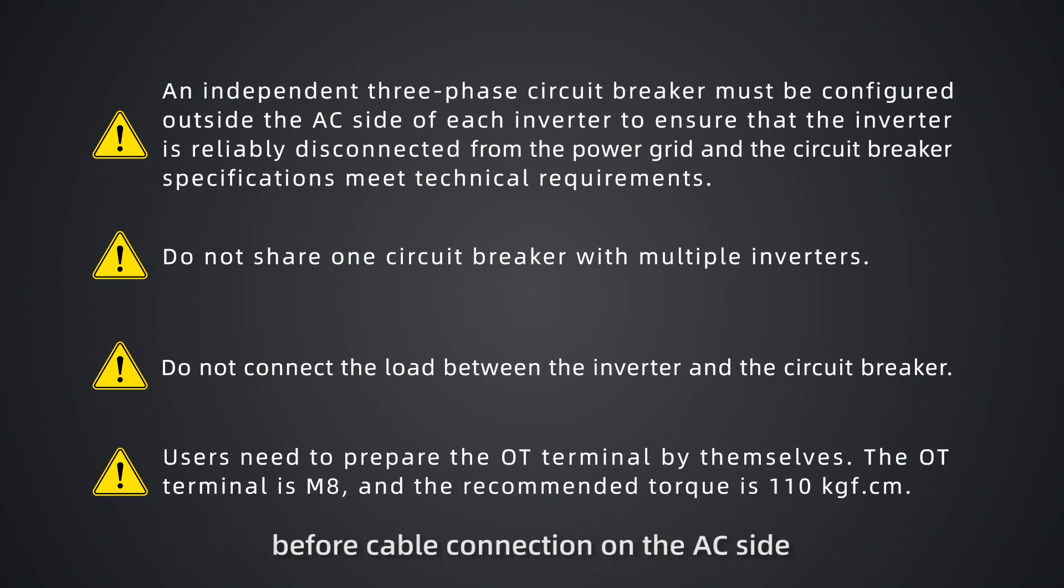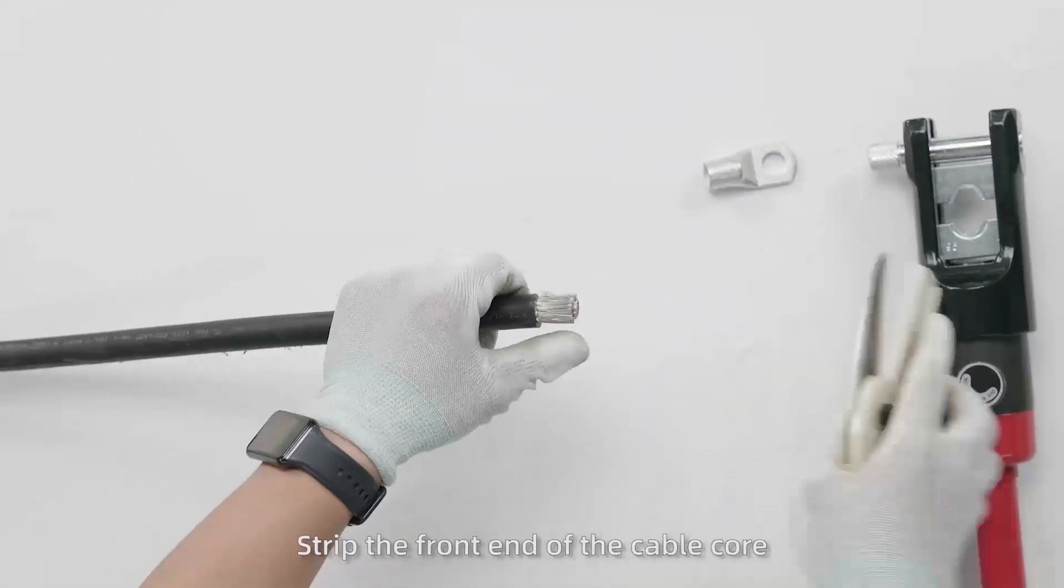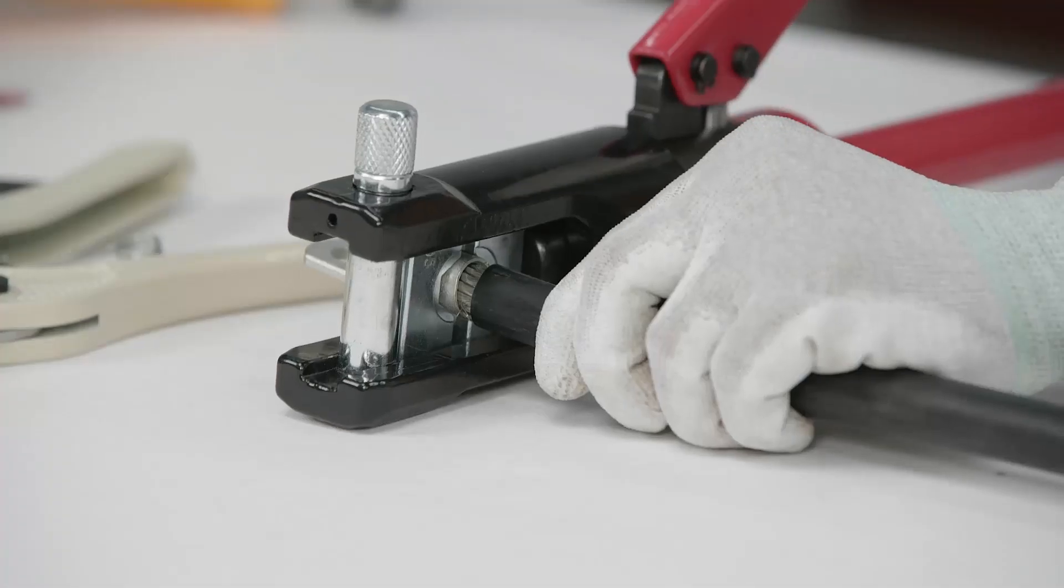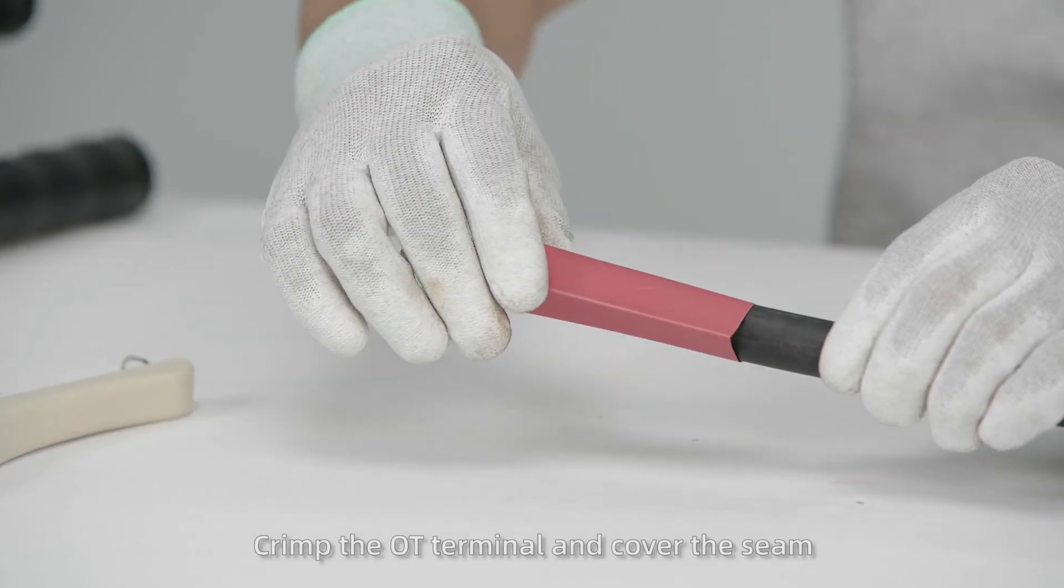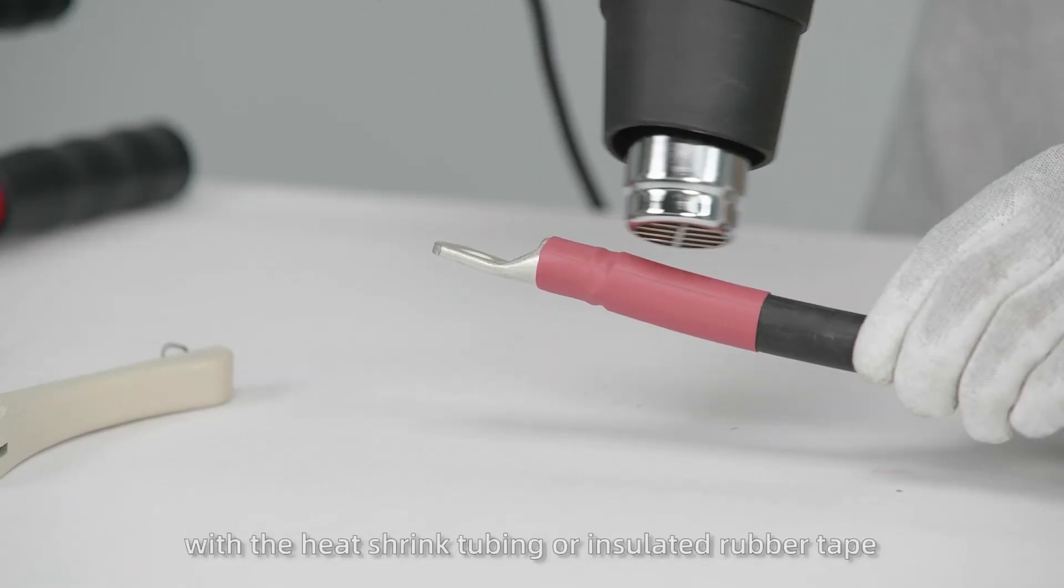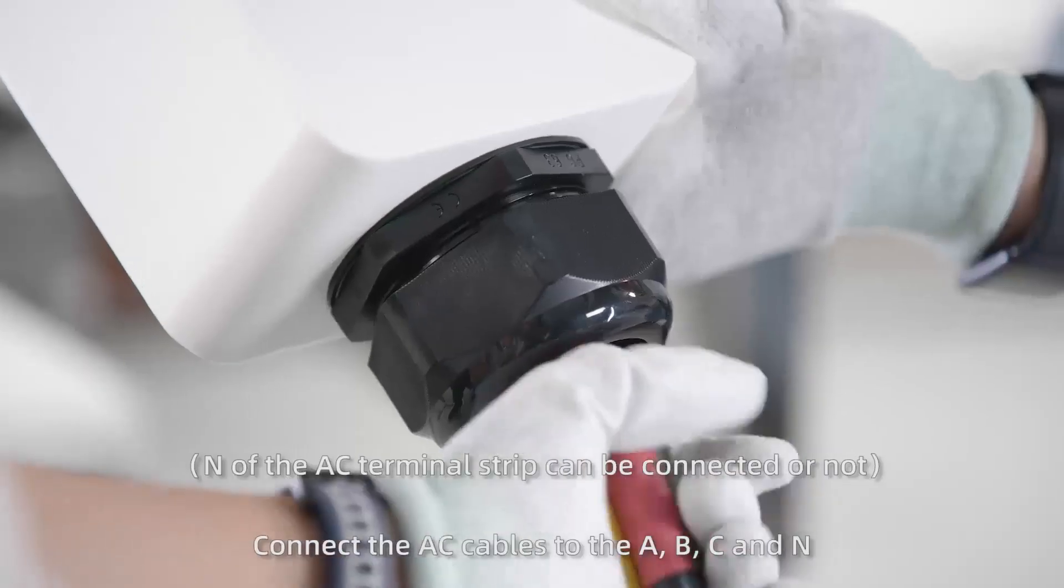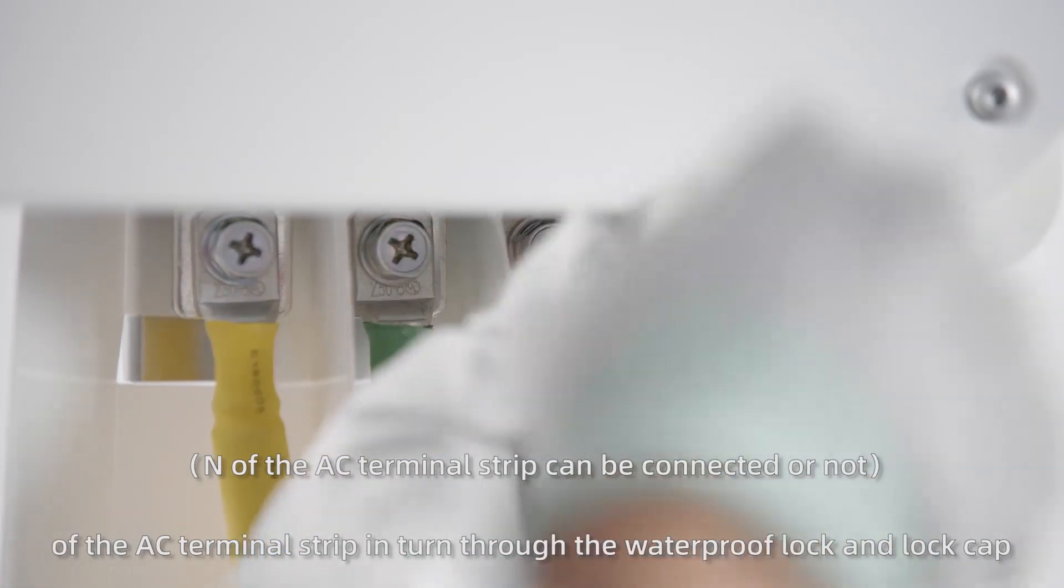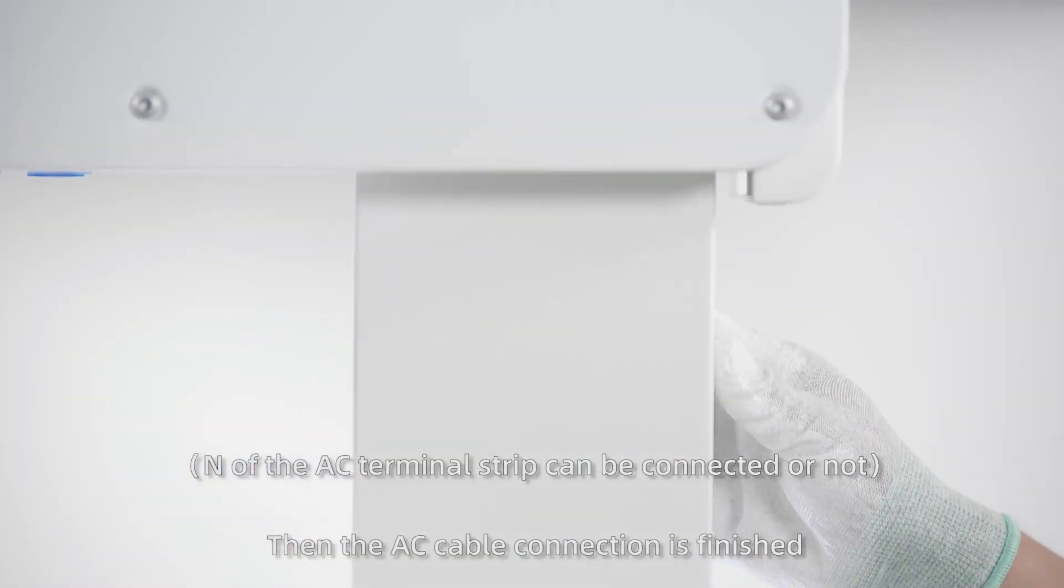Then, connect cables on the AC side. Pay attention to the above precautions before cable connection on the AC side. First, make the OT terminal. Strip the front end of the cable core. Crimp the OT terminal and cover the seam with the heat shrink tubing or insulated rubber tape. Then install the waterproof lock and unscrew the lock cap of the waterproof lock head. Connect the AC cables to the A, B, C, and N of the AC terminal strip in turn through the waterproof lock and lock cap. Reinstall the AC cable cover and tighten the lock cap. Then the AC cable connection is finished.